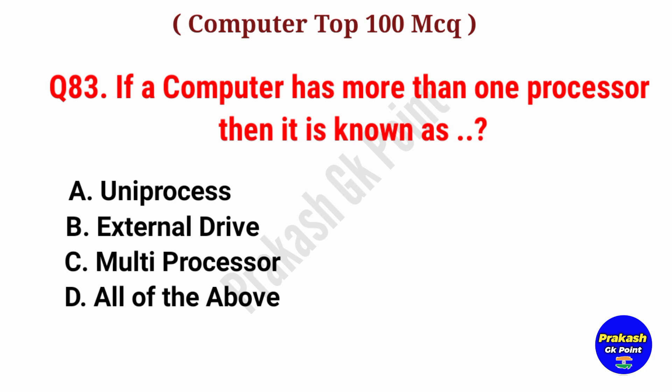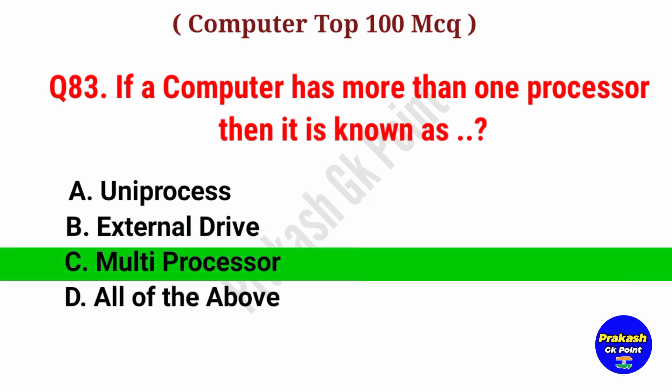If a computer has more than one processor, then it is known as. Answer: Option C, Multiprocessor.